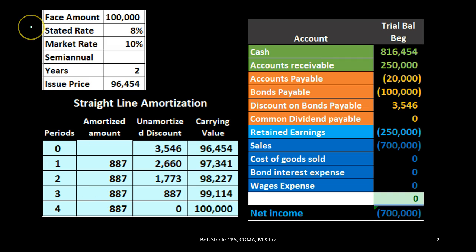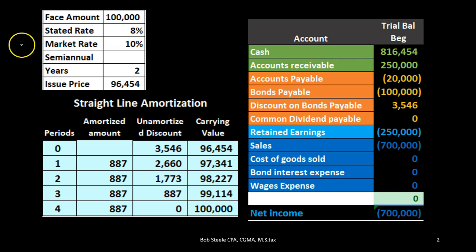We're going to have the face amount of the bond: $100,000. The stated rate on the bond is 8%. The market rate is 10%. We see the market rate is greater than the stated rate, and therefore we issued it at a discount — a price lower than the face amount — in this case, $96,454.